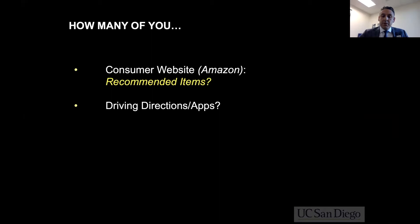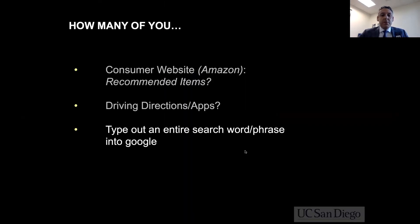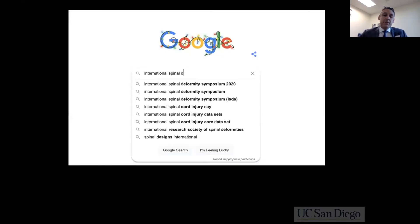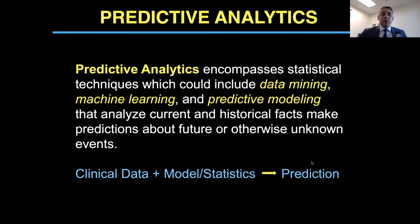What about when you're driving to work and you type in a location in your app — you see three different routes, you see the fastest route, and you notice that over the last few years this accuracy has gotten better and better. And when you go to Google and type in a search word or phrase, you don't even have to complete the entire word before Google gets it right. Machine learning and predictive analytics are an integral part of our daily lives.